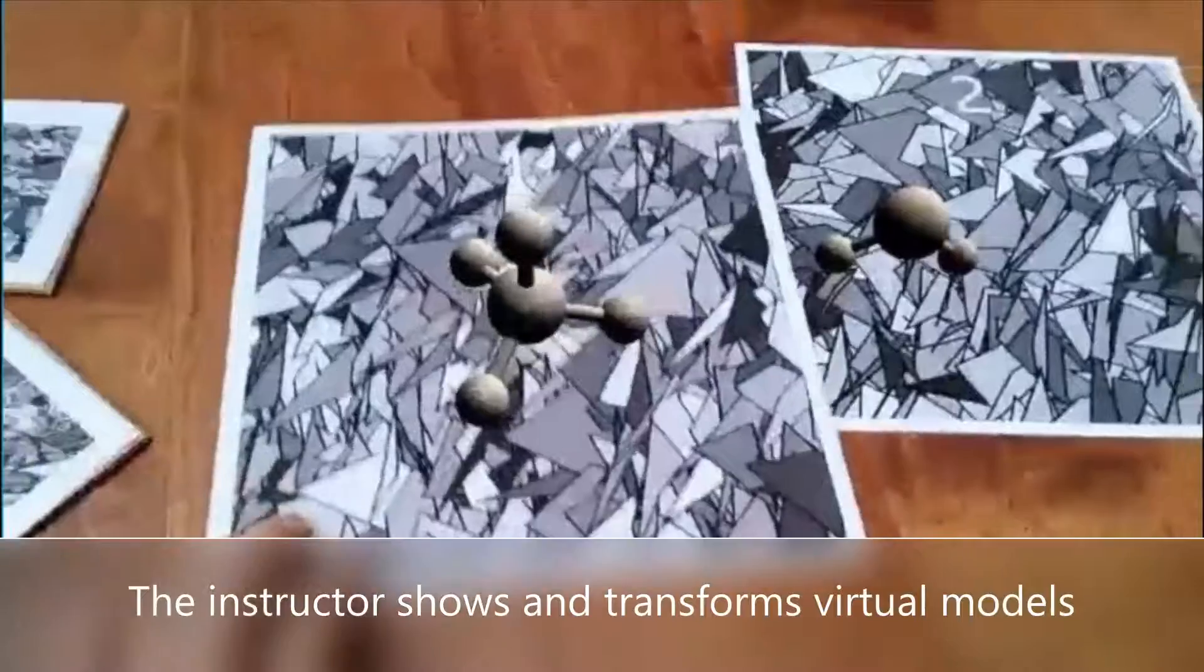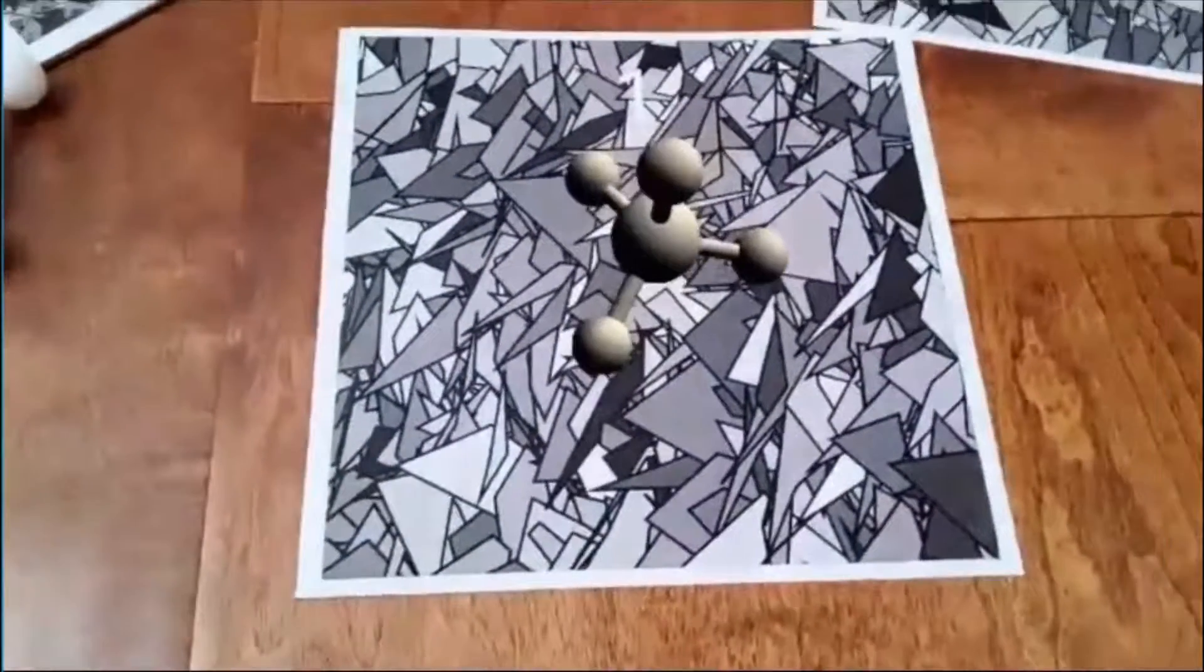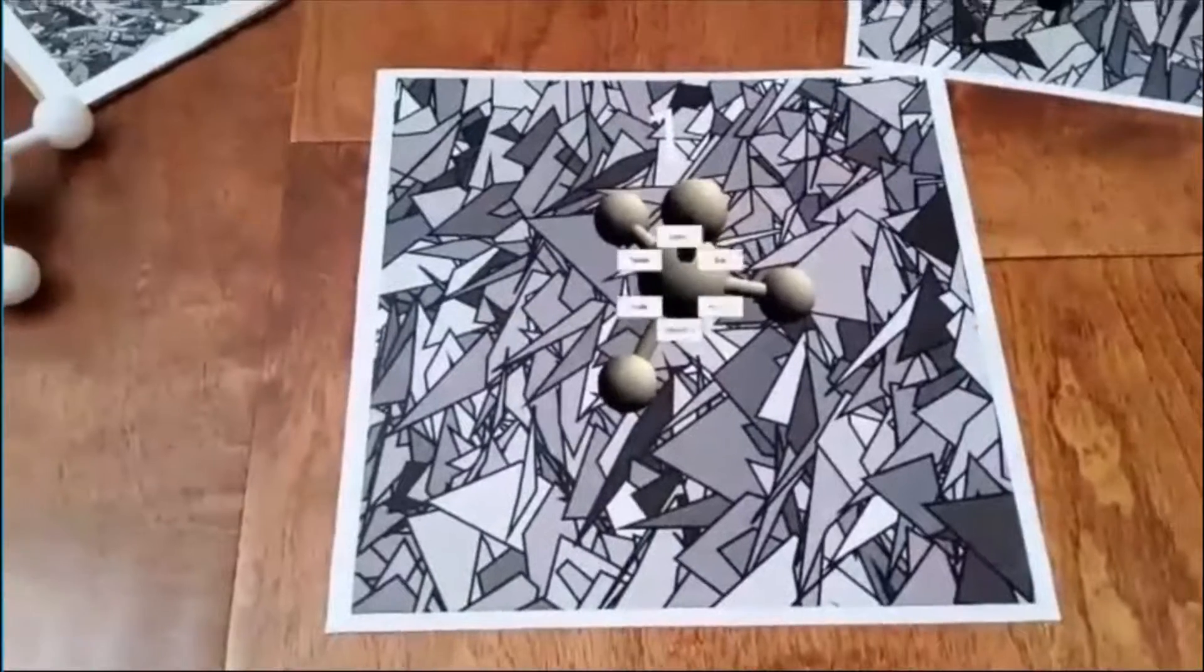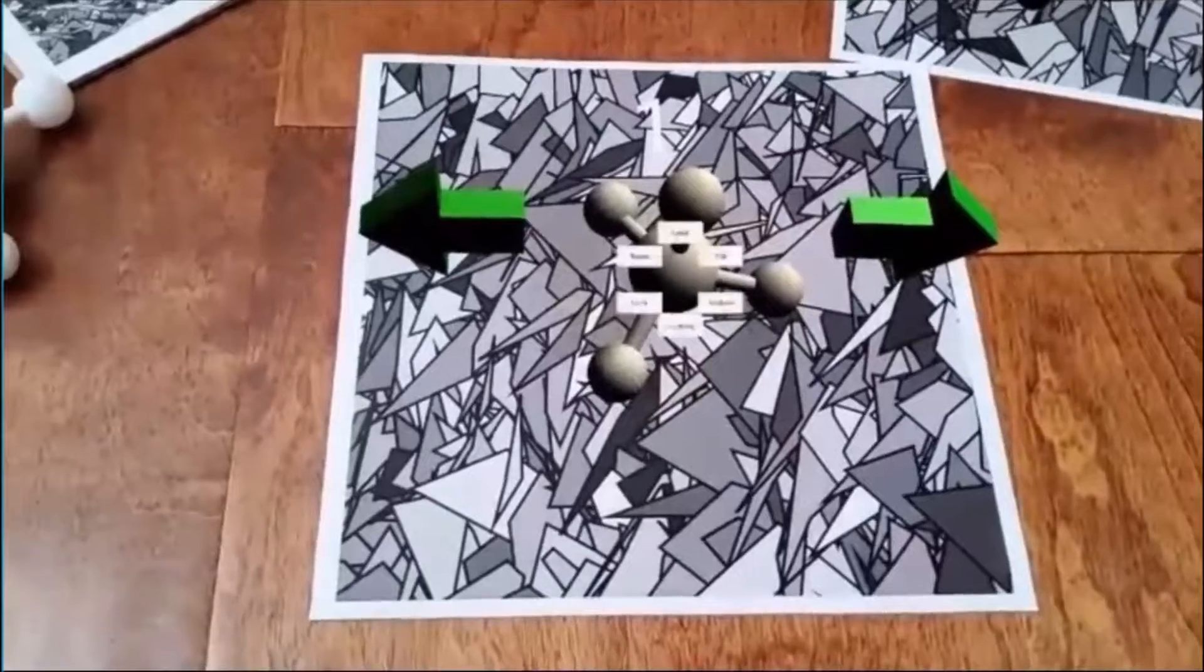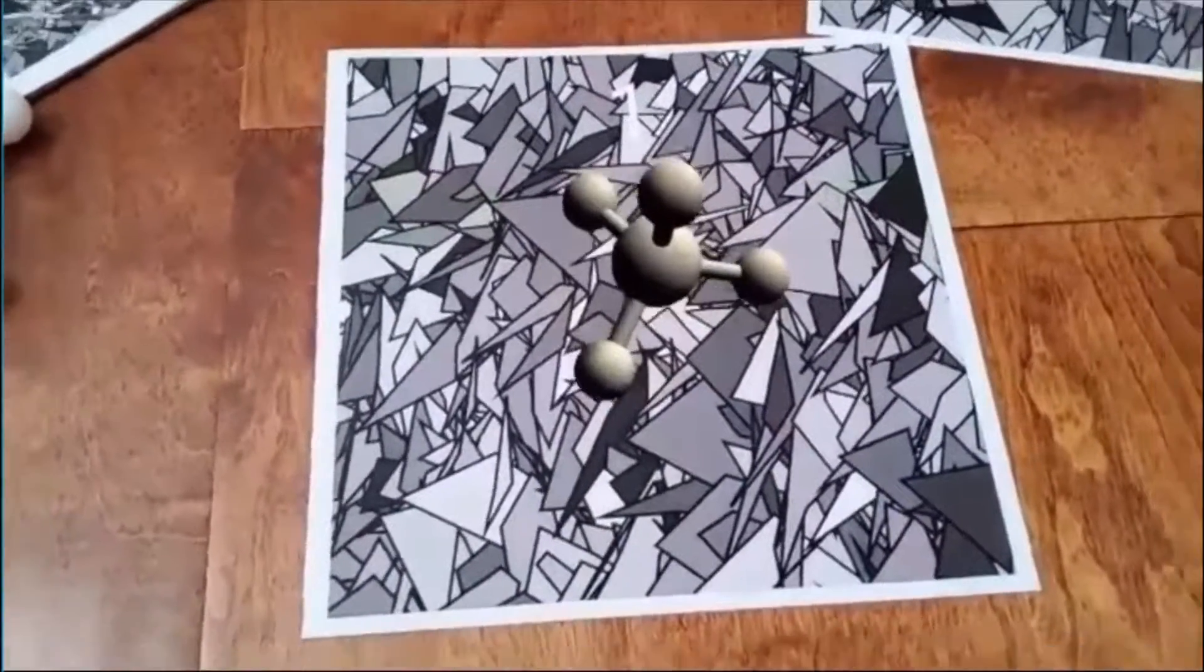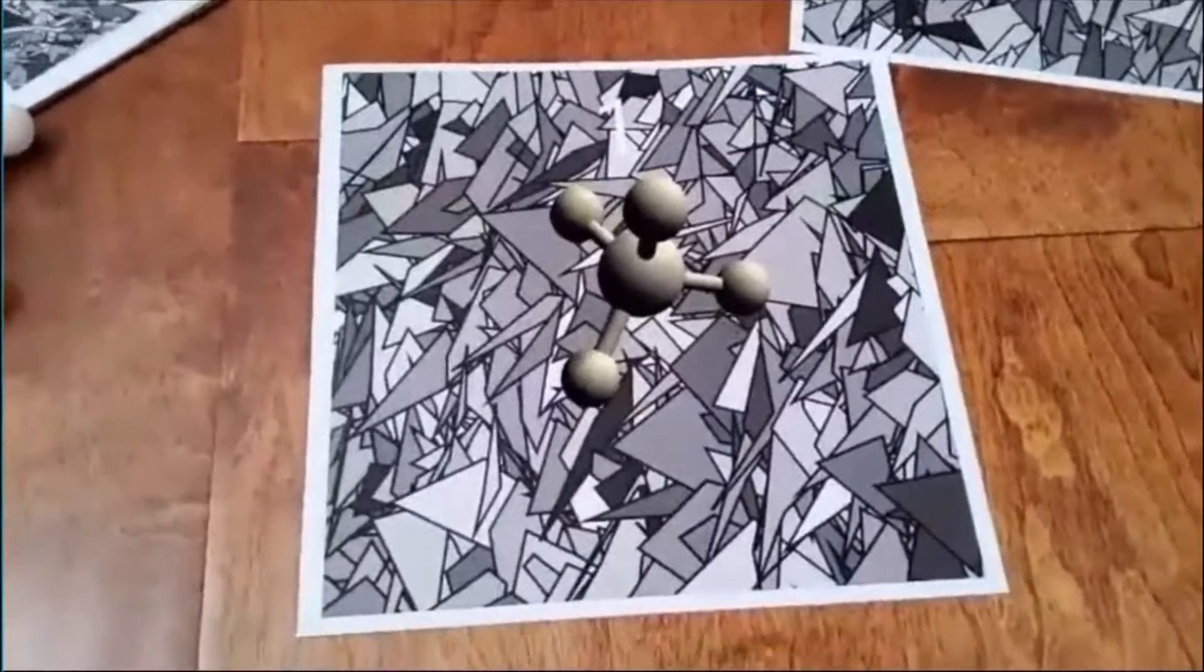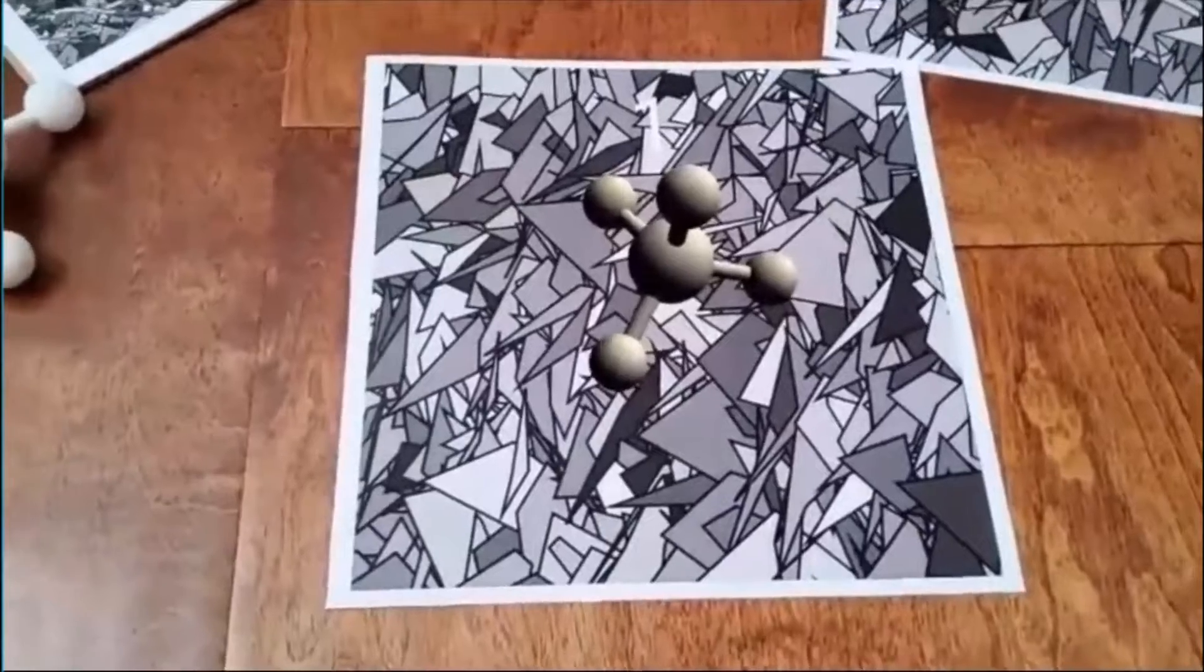Let's take a closer look at methane. Methane is a nonpolar molecule, which means it doesn't have a net charge difference across the molecule. As I'm rotating it, you can see it is a symmetric molecule. Even though the bonds are polar, because carbon and hydrogen have different levels of electronegativity, or affinity for electrons, the symmetric nature cancels out the dipoles of each bond, resulting in a nonpolar molecule.